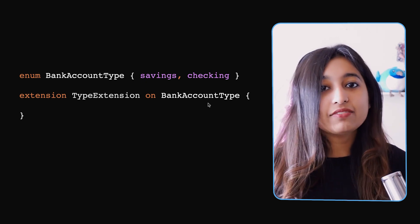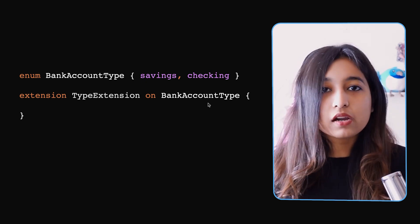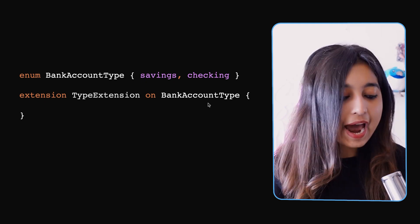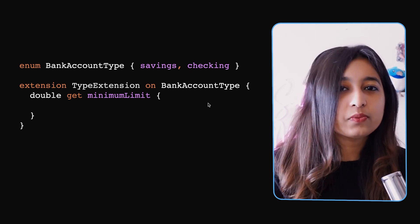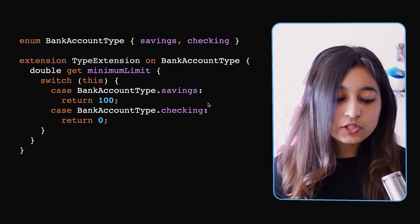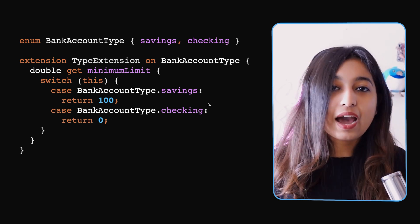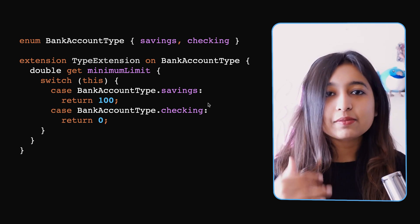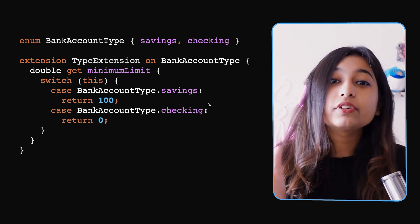Let's talk about enums. We have a love-hate relationship with enums — we love how easy they are to set up, but we get frustrated because we want to do more with them. With Dart 2.7, when extension methods arrived, it became easy to extend enums and add functionality. For example, we have the enum `BankAccountType` with values `savings` and `checking`, and we create an extension called `TypeExtension`. In this extension, we can create a switch case to get the minimum limit associated with each enum value — $100 for savings and $0 for checking.